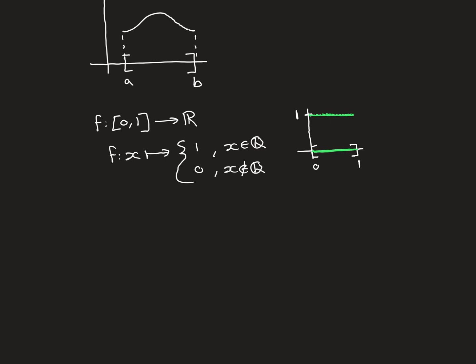So this is a very strange curve: you've got these two apparent straight lines, but both have holes in. The upper line has holes where all the irrational numbers are missing, and the lower line has holes where all the rational numbers are missing. So what is the area under that curve? It's not intuitively obvious — is it 1 times 1 equals 1, or 0 times 1 equals 0? We'll see how this function does not have a Riemann integral.